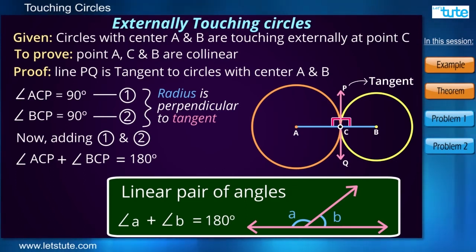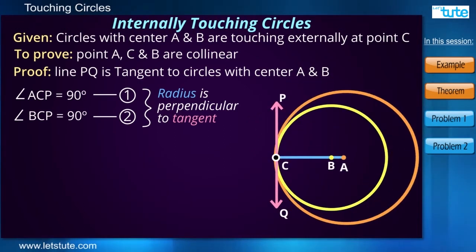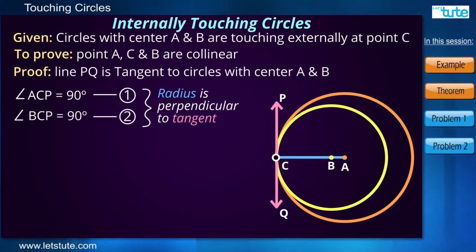But this is true in the case of externally touching circles. Now we know that AC will be perpendicular to the line PQ and BC will also be perpendicular to line PQ. But if AC and BC are perpendicular to the same line and on the same point, then it has to be the same line. Correct?